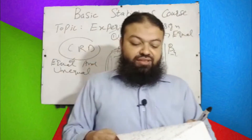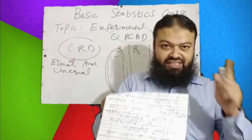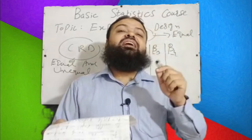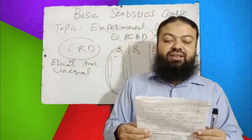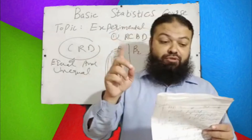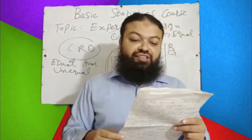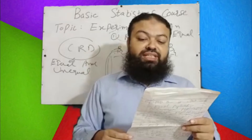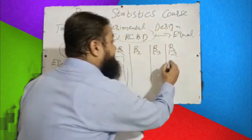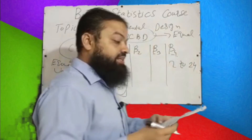Question number seven: Two-way ANOVA is used in the analysis of — a) CR design (incorrect); b) LSD design (incorrect); c) RCBD — RCBD is the correct option. Question number eight: RCBD is available for a wide range of treatments — a) 12 to 40; b) 22 to 62; c) 22 to 24; d) 2 to 24. Whenever we have a range of 2 to 24 for the number of treatments, RCBD is available. The correct answer is d) 2 to 24.